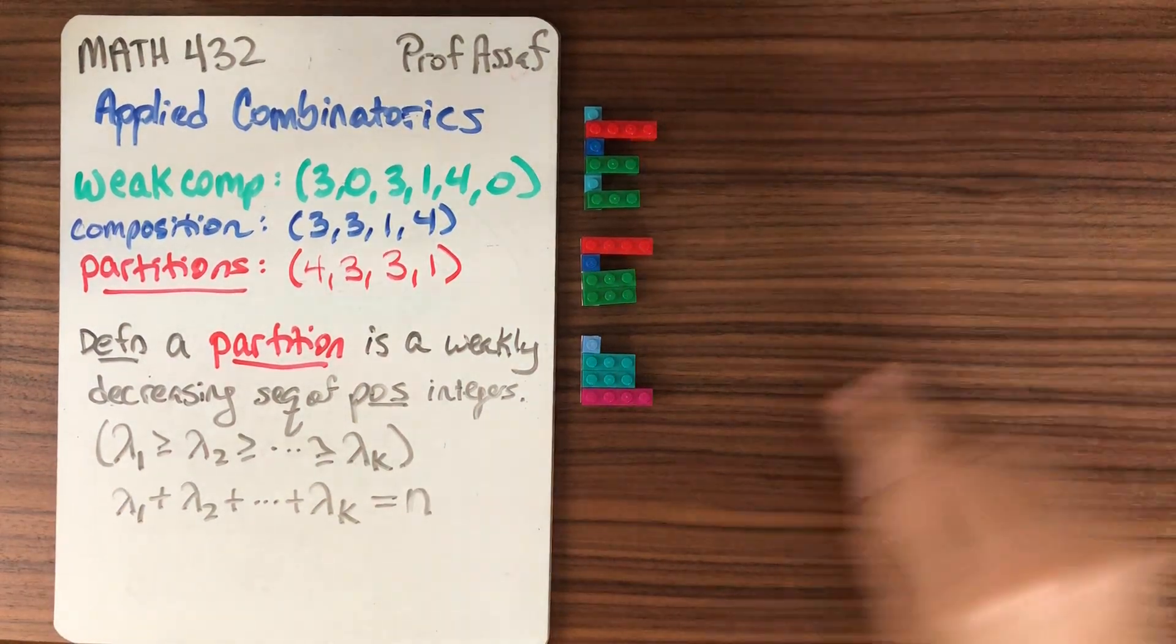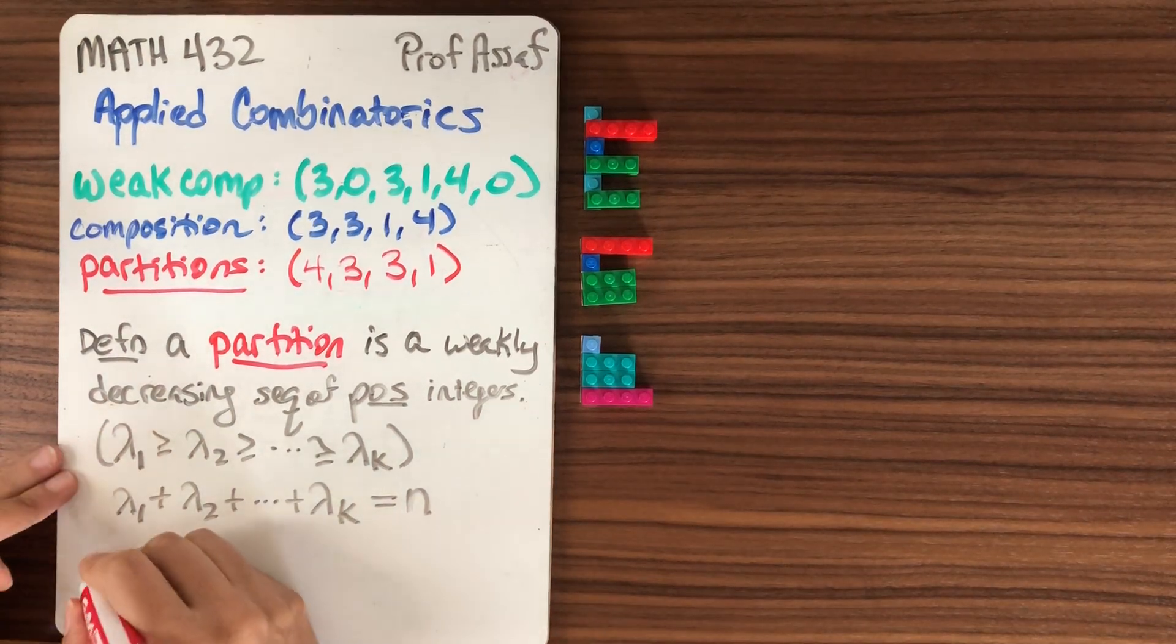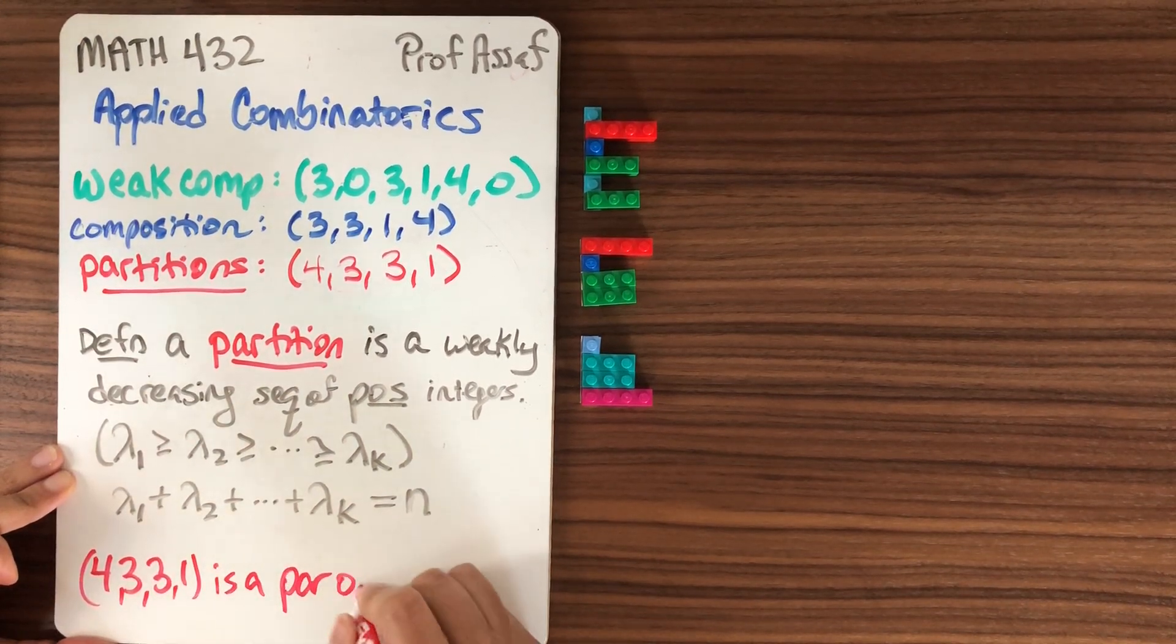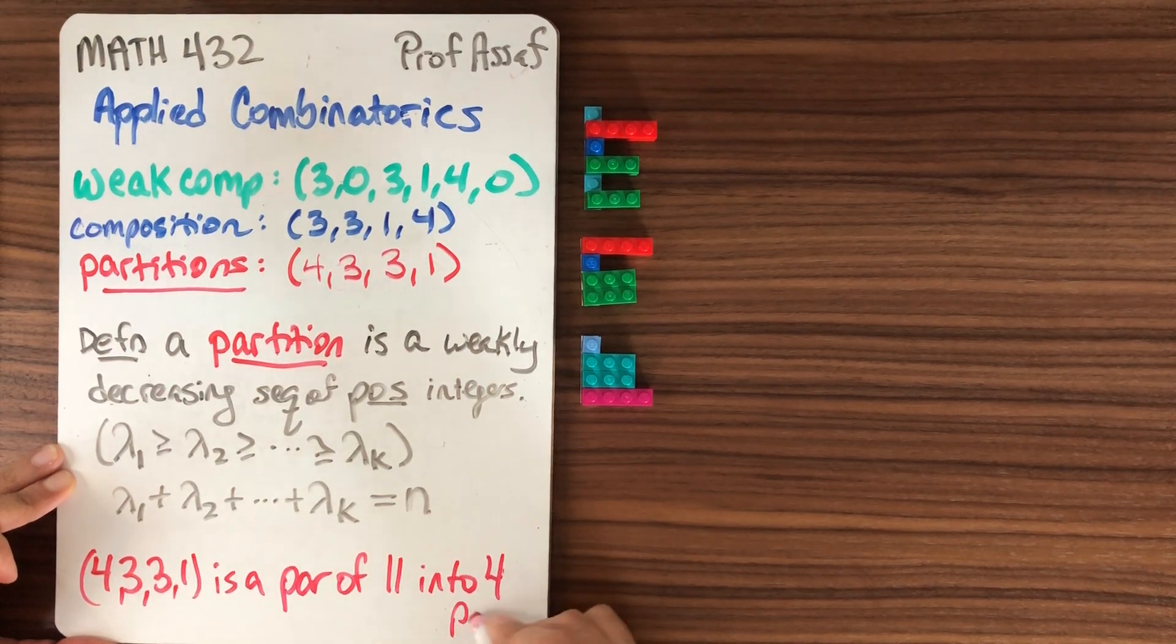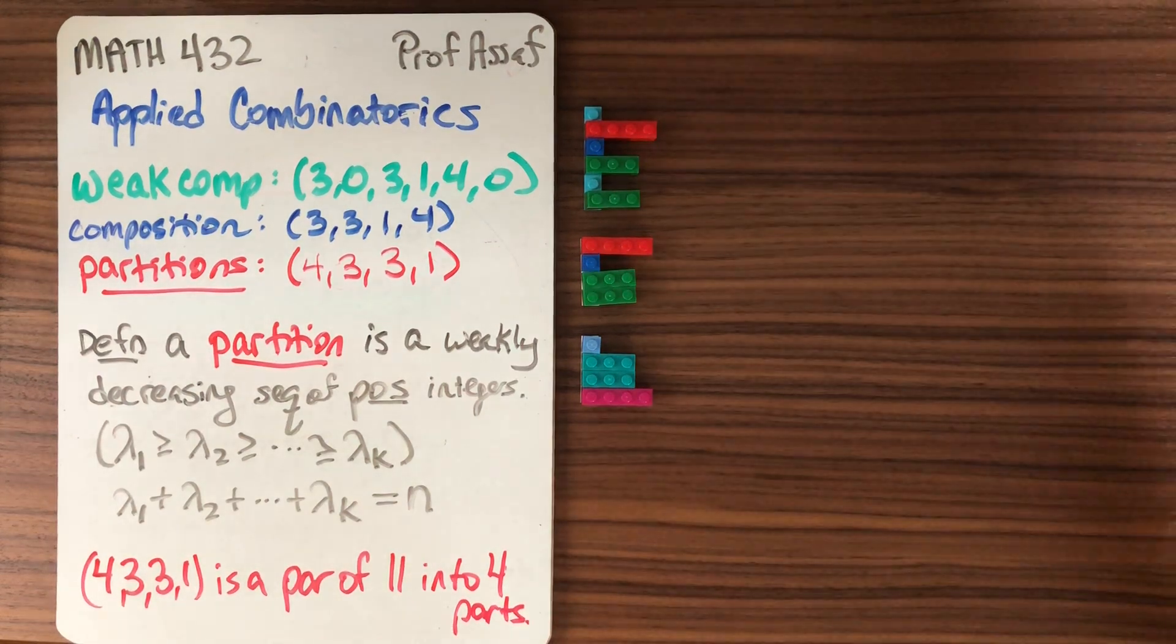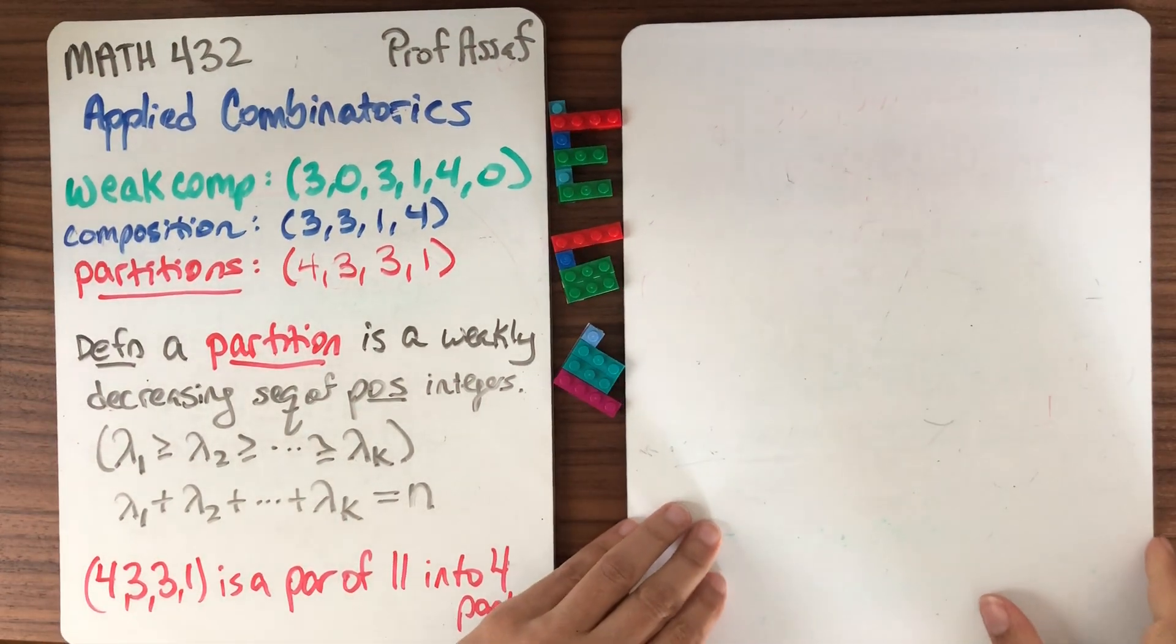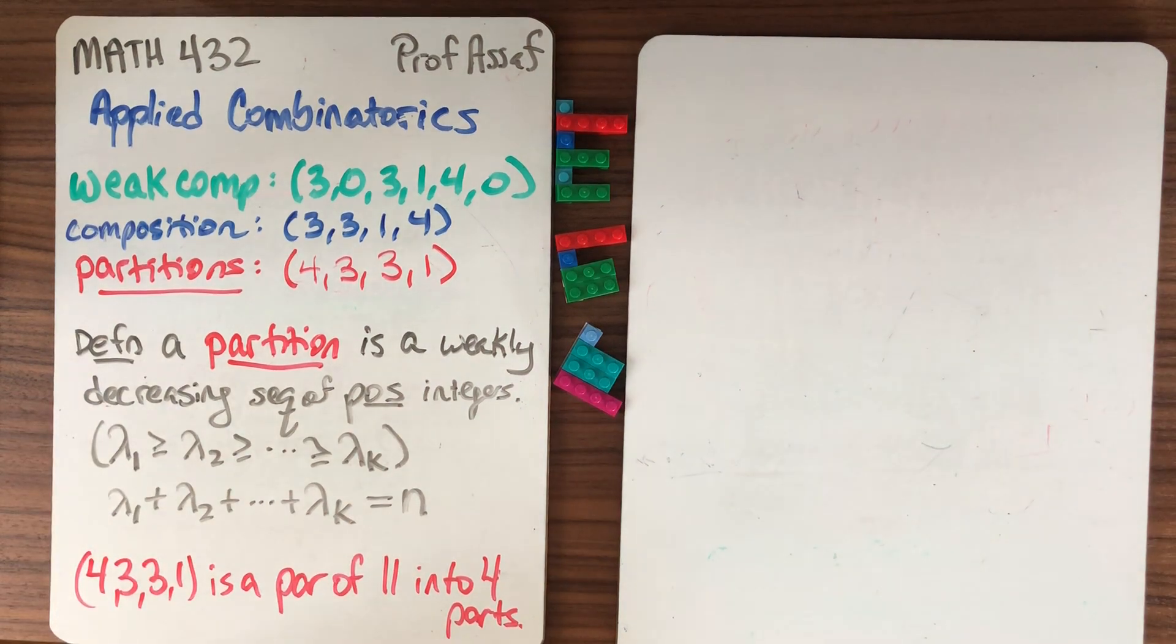So this example that we have, 4, 3, 3, 1, 1, this is a partition of 11 into 4 parts. So partitions are much more challenging to enumerate than compositions or weak compositions. They have the same advantage in terms of their finiteness as the compositions.